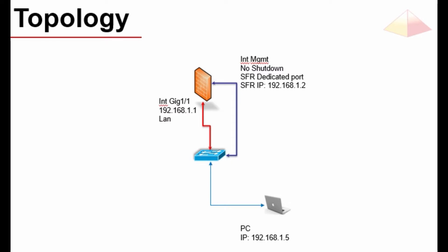Hello everyone, welcome to this video. In this video we will be seeing installing SFR module in the ASA-556x. For this installation we require a topology like this. Here we have connected two interfaces from ASA-556x to our LAN. One interface is GigabitEthernet 1/1, which is assigned with an IP address, and another one is the management interface, which is used dedicatedly for SFR only.